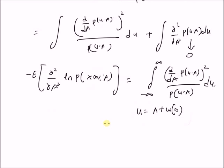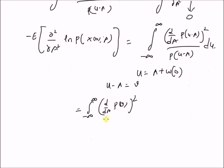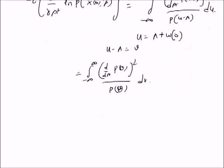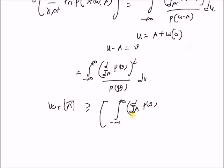By changing the variable U minus A to V, the limits remain the same. So the integral becomes the derivative of P(V) with respect to A, whole squared, divided by P(V), integrated with respect to V. This is the negative expectation of the second derivative of the log likelihood function. Therefore, the CRB on the variance of the estimator A-hat is given by the inverse of this integral. Thanks for watching.